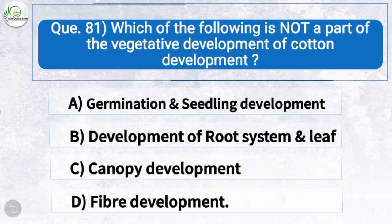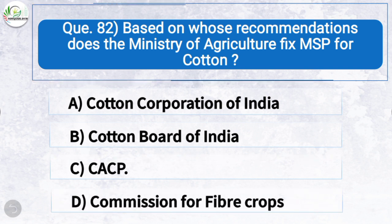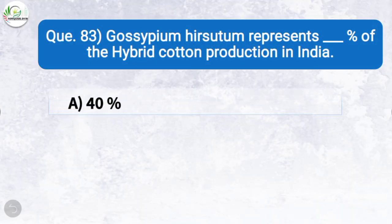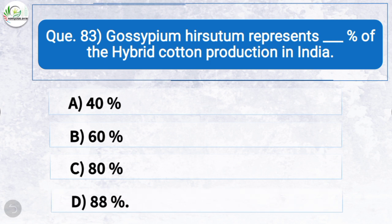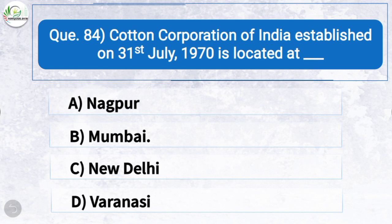Question eighty-two: Based on whose recommendations does the Ministry of Agriculture fix MSP for cotton? The correct answer is option C: CACP — Commission for Agricultural Costs and Prices. Question eighty-three: Gossypium hirsutum represents what percentage of the hybrid cotton production in India? The correct answer is option D: 88 percent. Question eighty-four: Cotton Corporation of India, established on 31st July 1970, is located at — the correct answer is option B: Mumbai, Maharashtra.